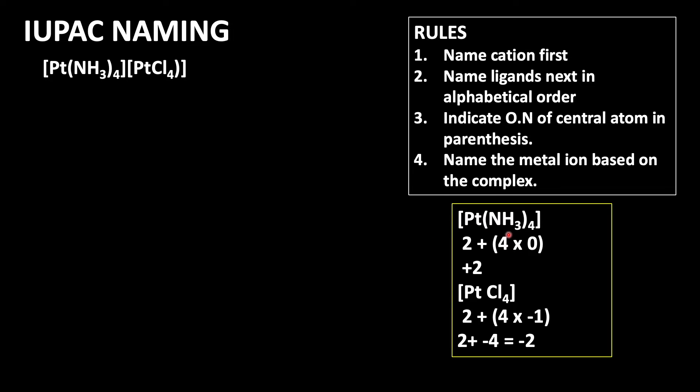Look at [Pt(NH₃)₄]. Platinum is in plus 2 oxidation state. Then NH₃—there are 4, and it's a neutral ligand. So if you add, we will get plus 2. This means this is the cationic complex ion.